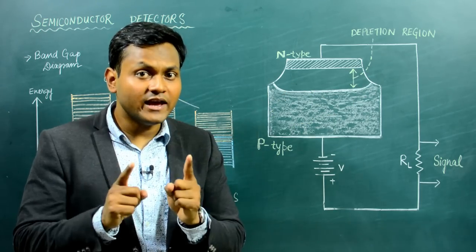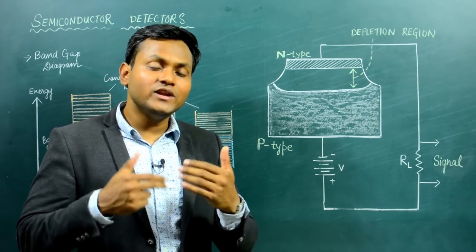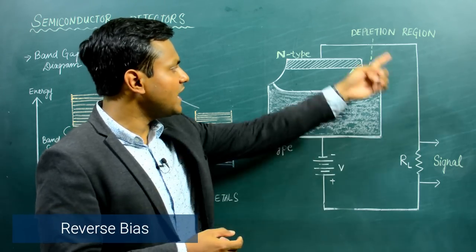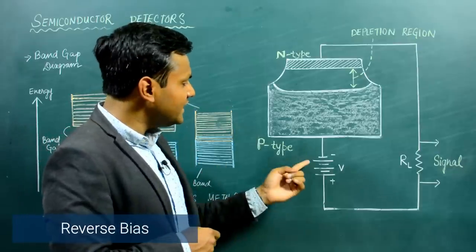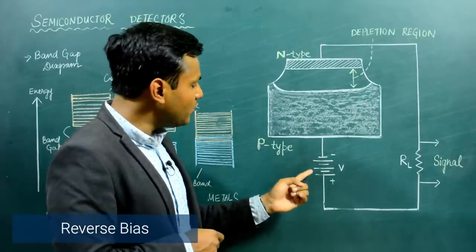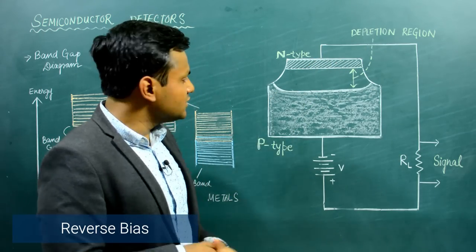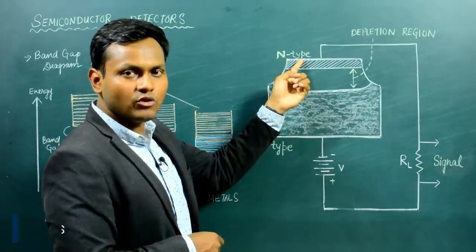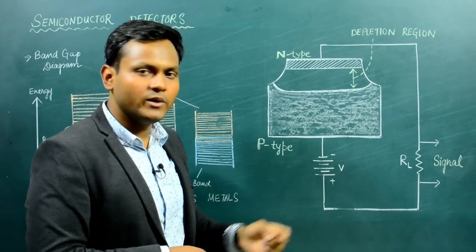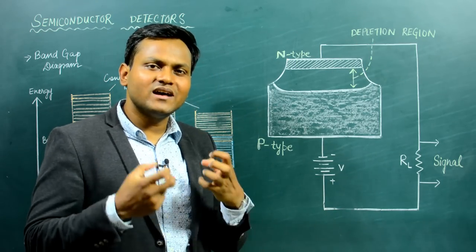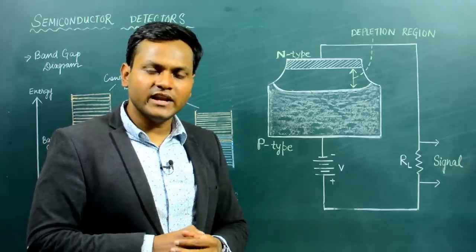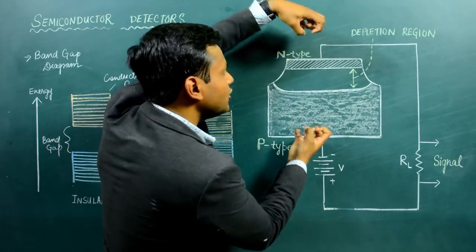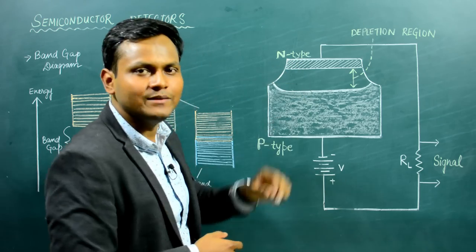It is this depletion layer that behaves as a nuclear detector. To create a large depletion layer, we create a reverse bias scenario. In reverse bias, we connect the P-N junction diode to an external voltage, but the negative terminal of the battery is connected to the P-type and the positive terminal is connected to the N-type. The P-type has positive charge carriers but is connected to the negative terminal, and the N-type has electrons as majority charge carriers but is connected to the positive terminal. This is known as a reverse bias configuration, in which current is minimal. Because of opposite polarities, the charge carriers are attracted in opposite directions and a larger depletion region is created.